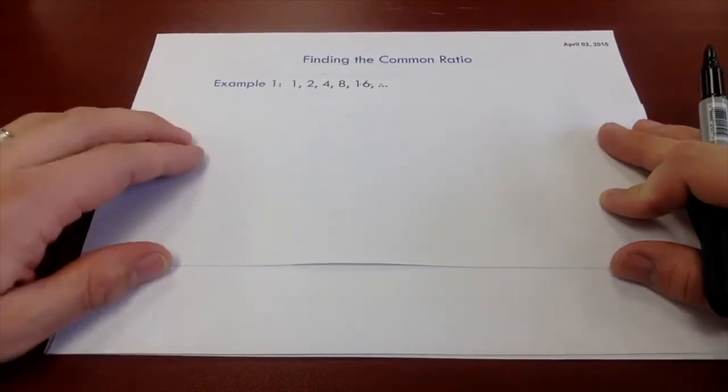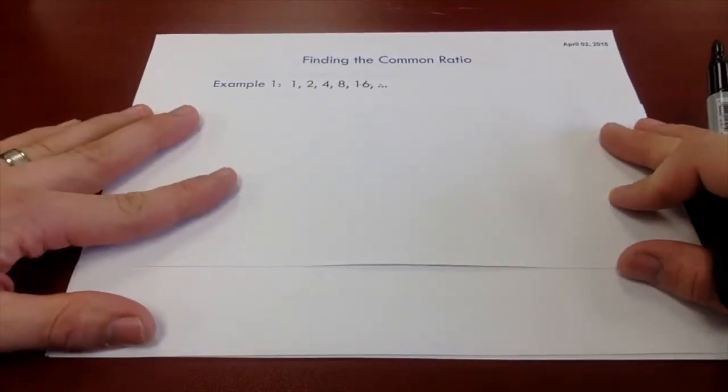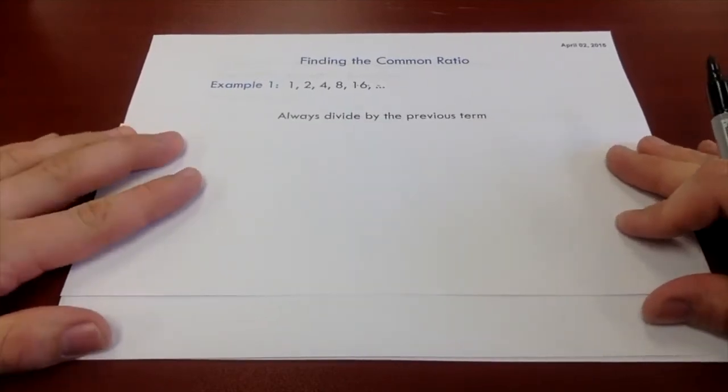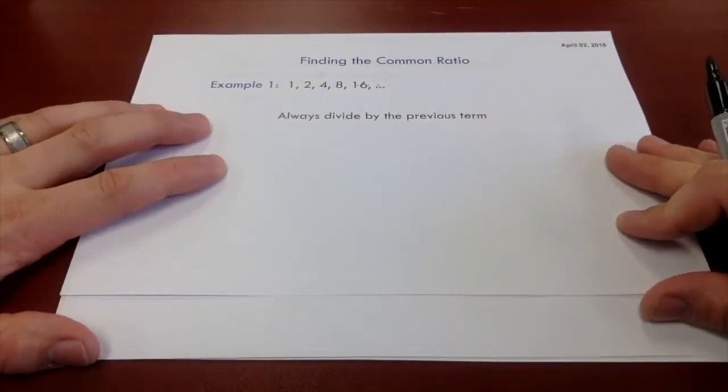Just before we get started, I just want to look at how you would determine what the common ratio is or even if there is a common ratio. And the way we do that is we take one term and divide by the previous term.